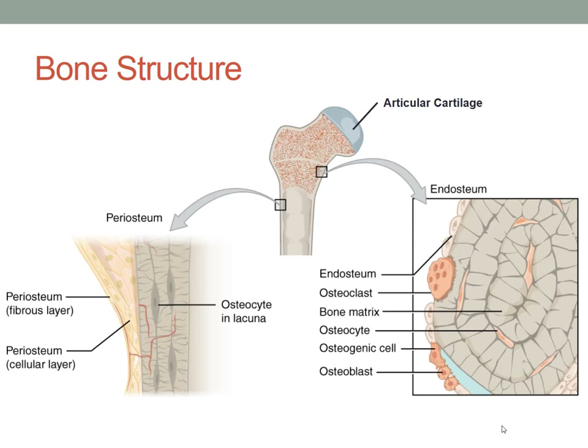Osteocytes do not have the ability to go through mitosis — cell division — which is how much of the body's cells actually regenerate. So within the bones there are osteogenic cells, which are stem cells. 'Osteo' means bone, and 'genic' refers to genesis or beginning. An osteogenic cell is the beginning of a bone cell — those are stem cells, as discussed in a previous chapter.